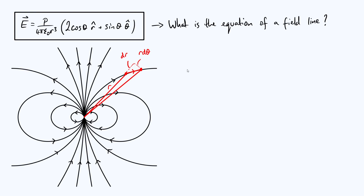Now let's draw on our electric fields. We said the electric field is a tangent to the electric field line at any given point, so the electric field at point one looks something like this — tangent to that black curve. We can also split it into r and theta components: E_r for the radial component, and E_θ for the component in the theta-hat direction.